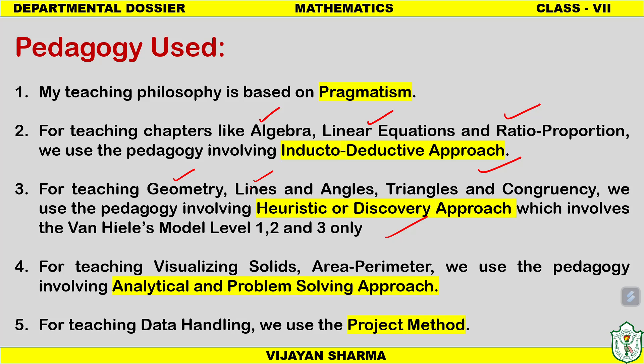For teaching visualizing solids like cube, cuboid, sphere, cone, and cylinder, as well as area and perimeter, we use the analytical and problem-solving approach. Questions in this domain involve finding volume, surface area, lateral surface area, curved surface area, and cost of painting — all of which are generally formula-based. We need to make students learn and memorize the formulas for area and perimeter of various shapes before the analytical and problem-solving approach can be effectively utilized.